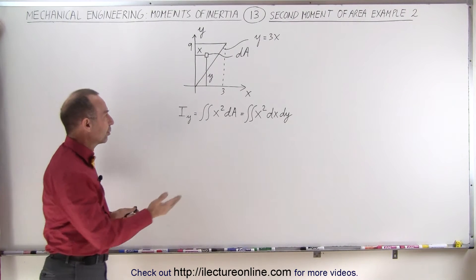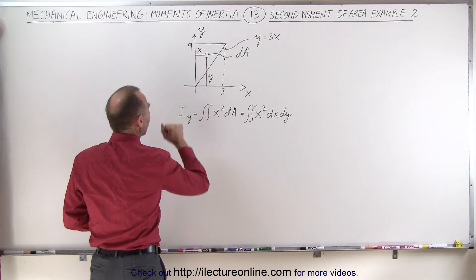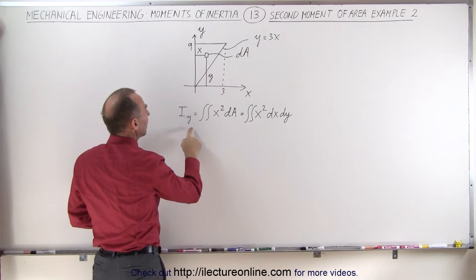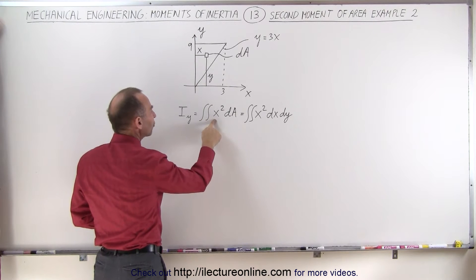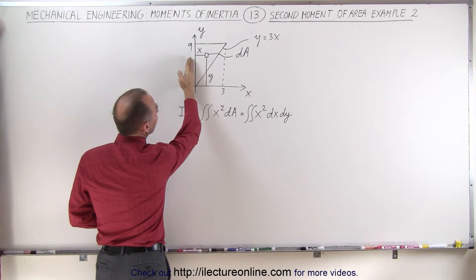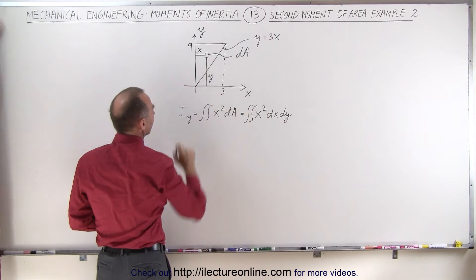Now the general formula, since we're going to do it with respect to the y-axis, is that the second moment of area with respect to the y-axis is the double integral of x squared dA, where x is the distance from the y-axis to our area element dA.